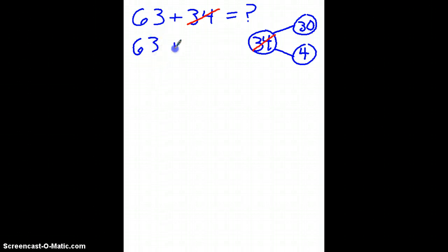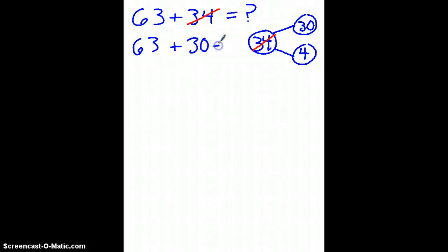Instead, I'm going to add 63 plus one of the parts of the number bond, 30. This is much easier to do.